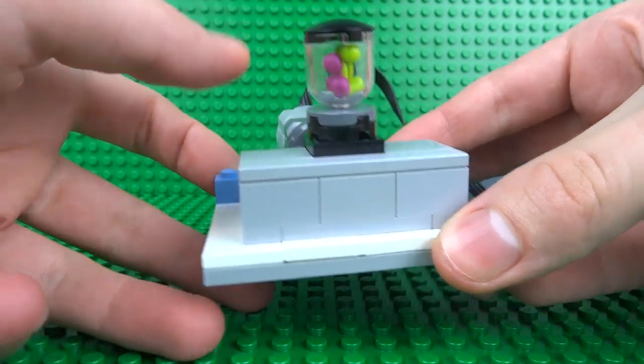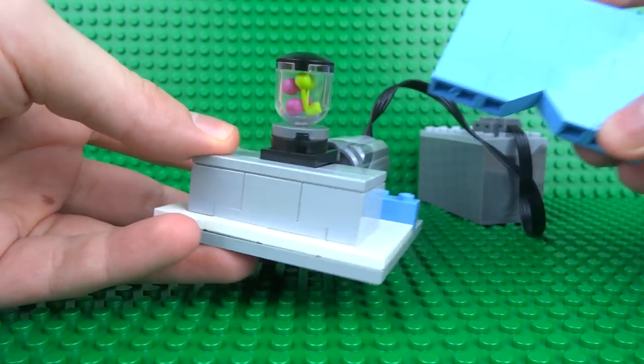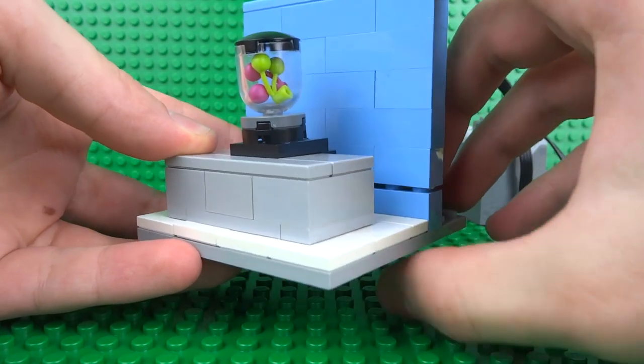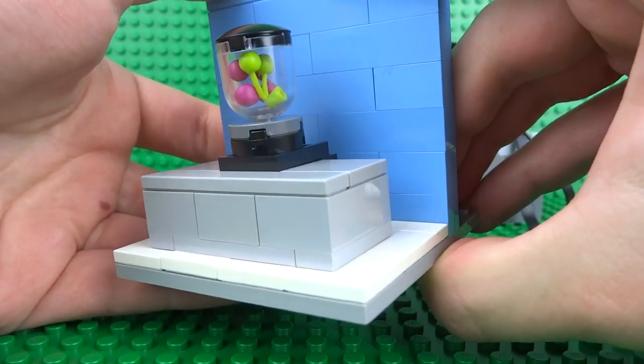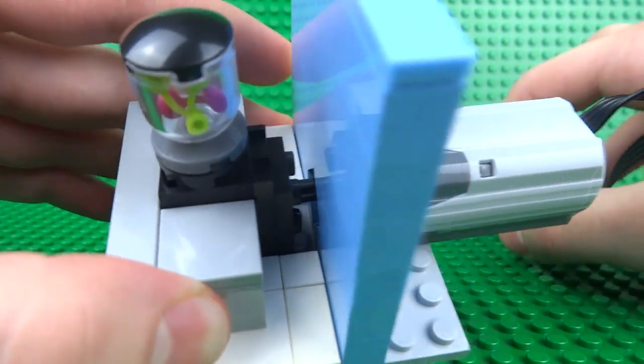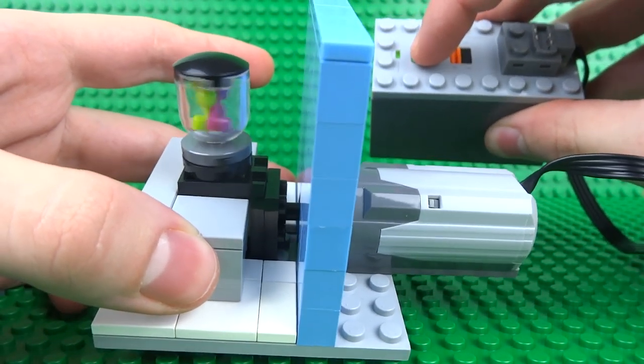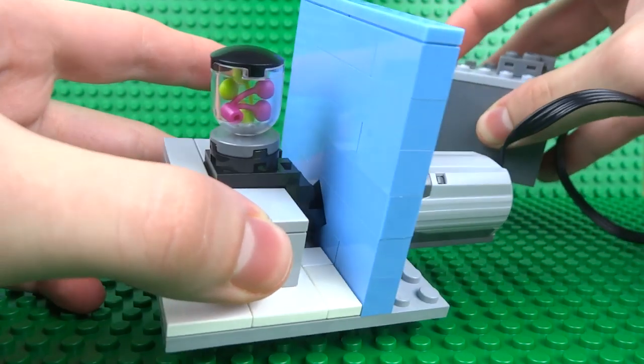And there you can see with the table on top, it creates the illusion that the blender is actually sitting on top of the table. Then we can complete this little build by building in a wall. You can just leave a small gap for the axle to go through, and that way when you press the motor, the blender will start blending.